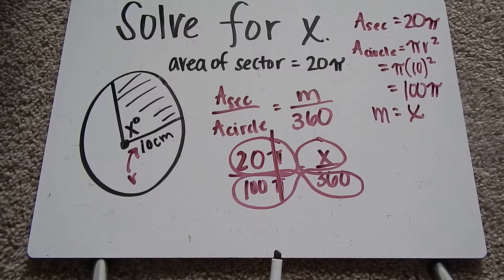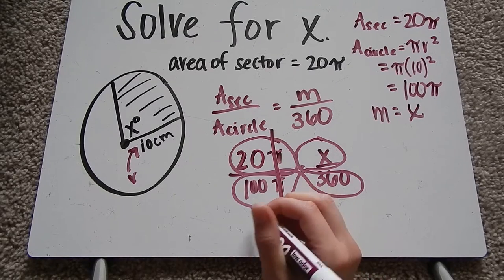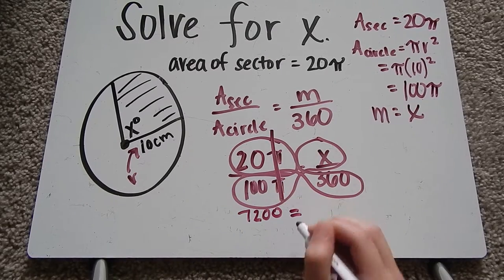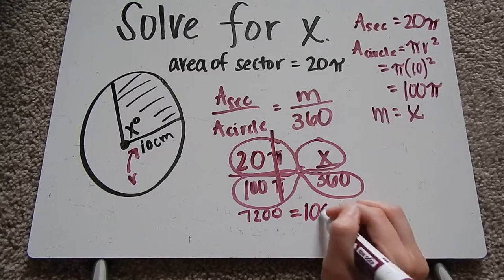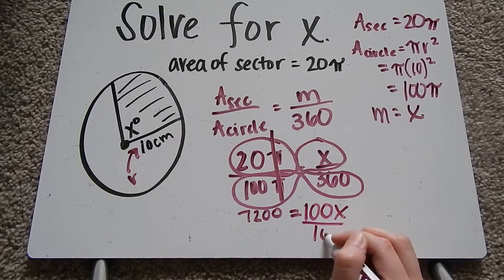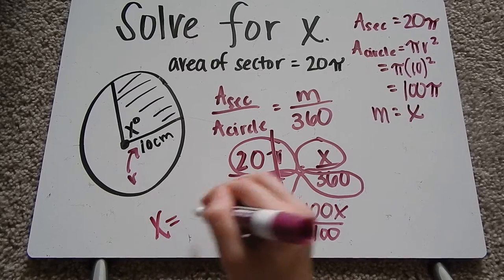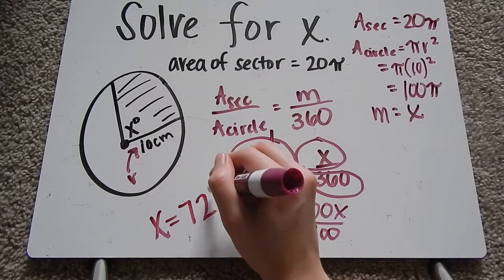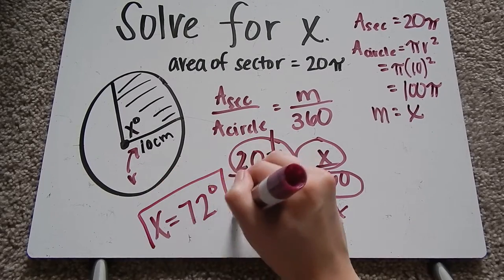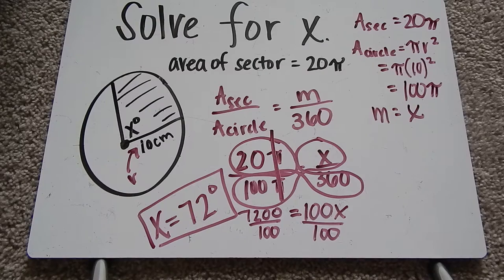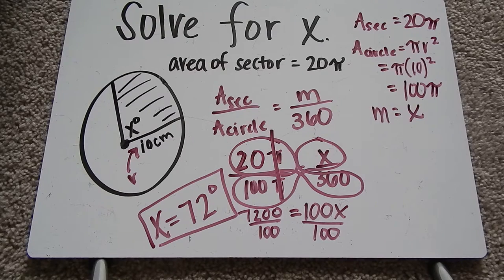So let's go ahead and cross multiply. 360 times 20, 7,200. 100 times x is 100x. Divide both sides by 100, and we'll get our answer. x equals 72. Since it's an angle measure, it's going to be written as degrees. So 72 degrees is my answer for x.